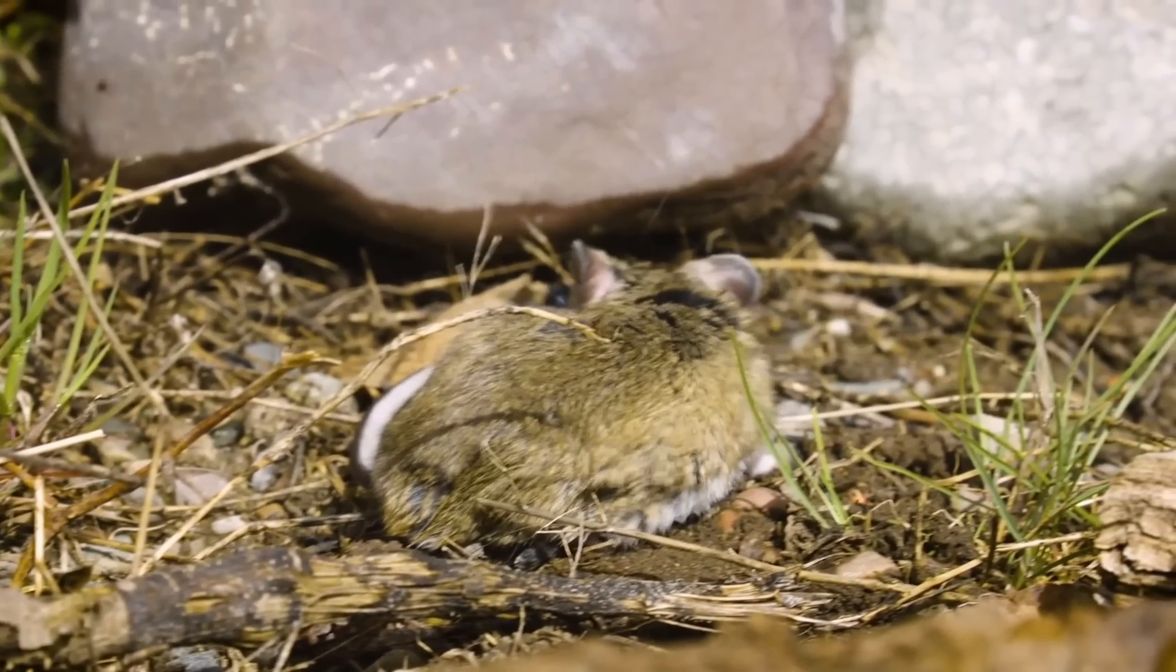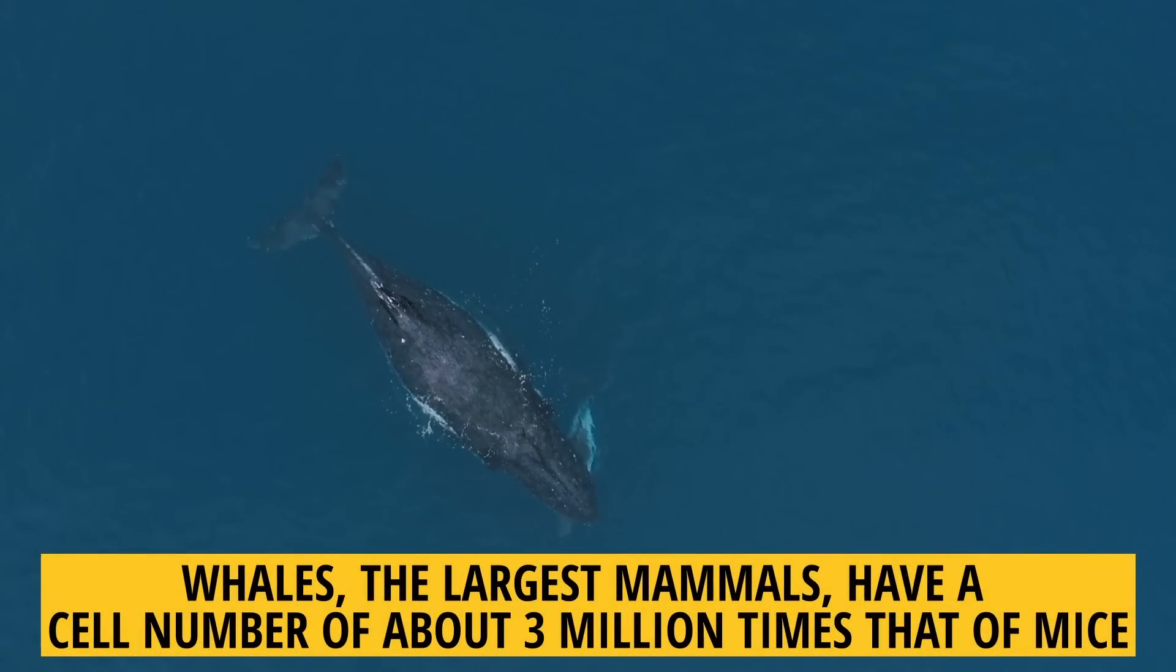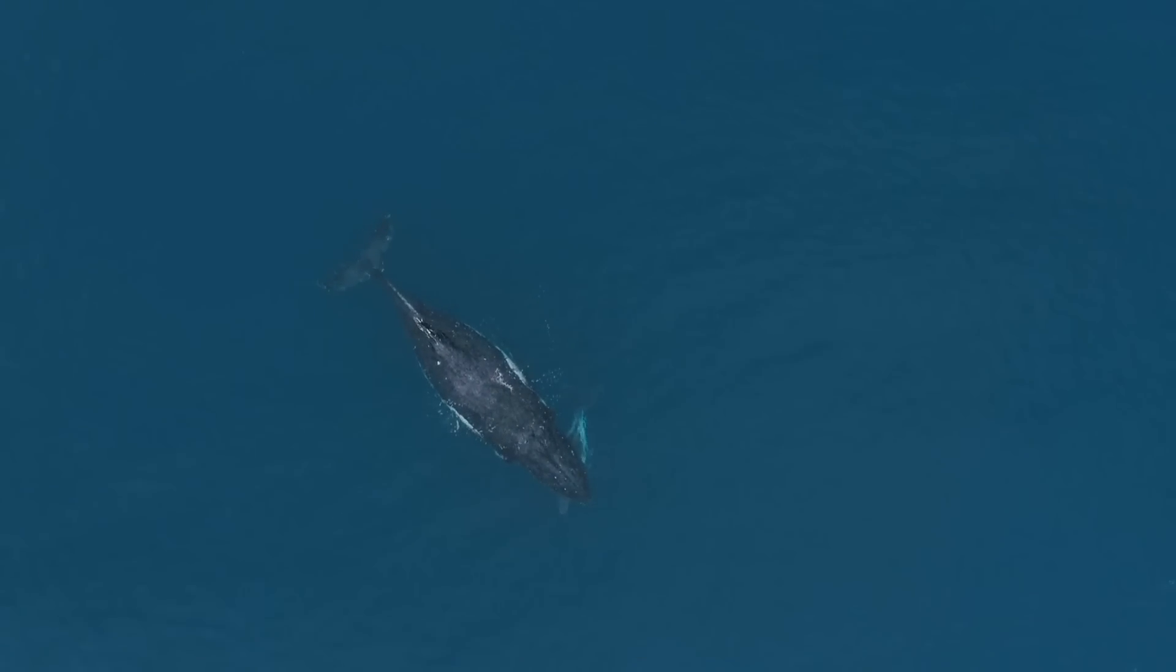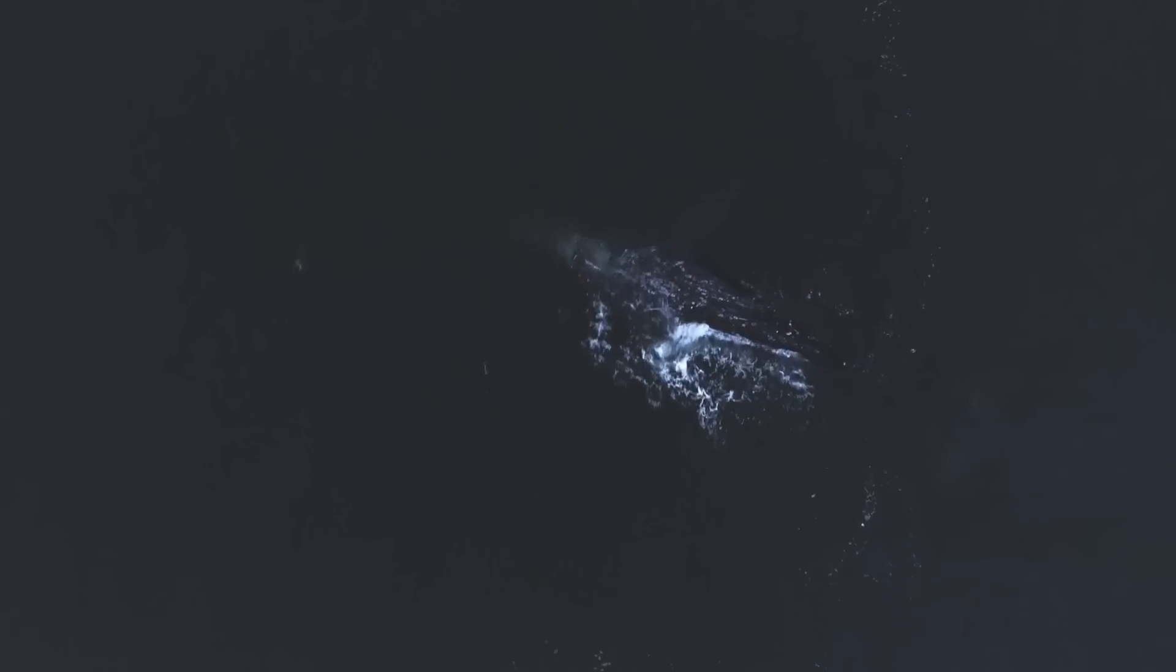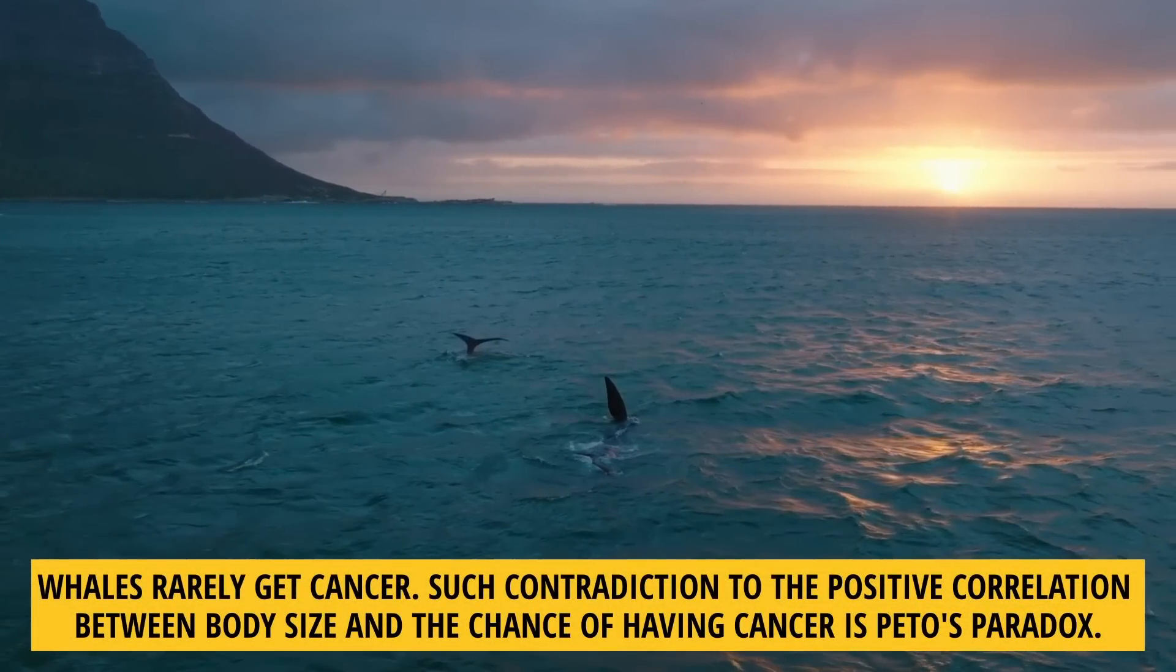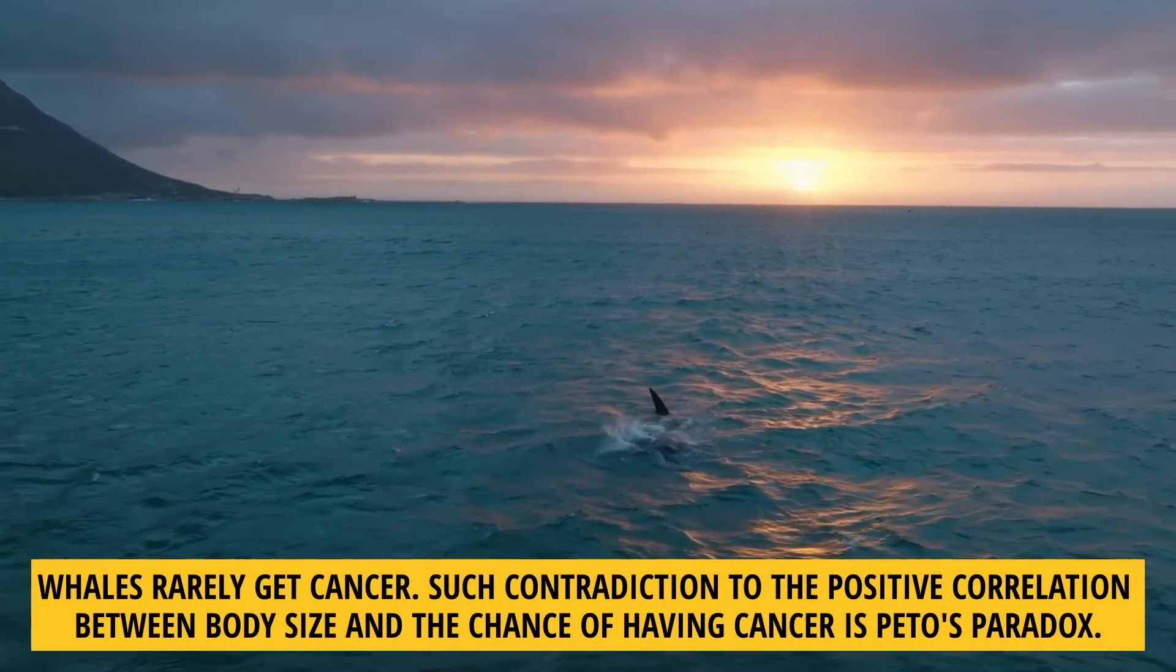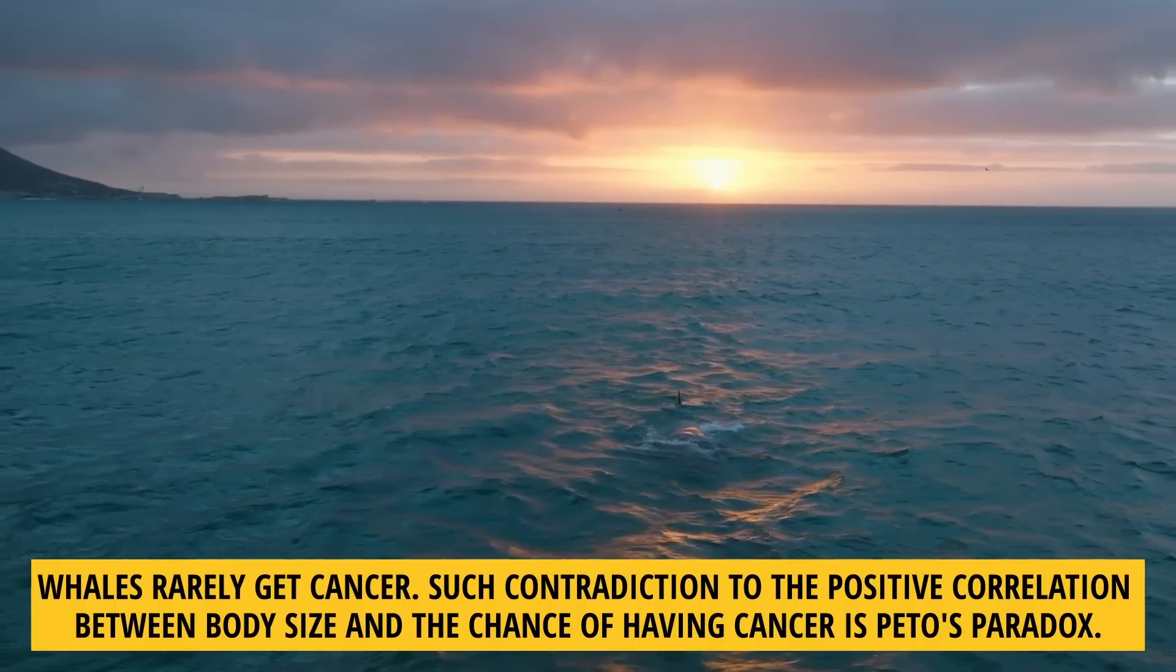This problem occurs not only in comparison between mice and humans. Whales, the largest mammals, have a cell number of about 3 million times that of mice. Then according to the positive correlation between body size and the chance of having cancer, we would guess that the possibility of having cancer for whales should be 3 million times higher than that of mice. Strangely, whales rarely get cancer. Such contradiction to the positive correlation between body size and the chance of having cancer is Peto's paradox.